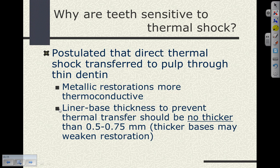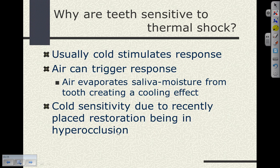Our liner and base thickness to prevent thermal transfer in very deep cavity preparations should be no thicker than half to three-quarters of a millimeter — thicker bases may weaken the restoration. If we're going to use a liner or base to prevent thermal transfer in metallic restorations, we'll place them with enough thickness to act as an additional barrier to thermal sensitivity. Cold usually triggers that thermal response, and air can also trigger a response by evaporating saliva moisture from the tooth, creating a cooling effect.